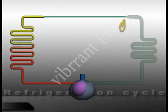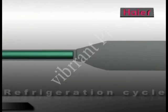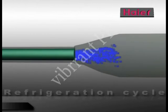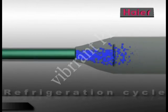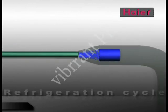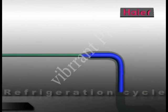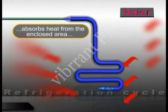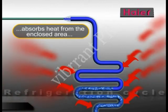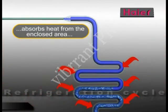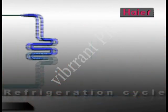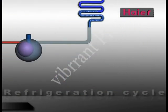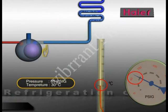This low pressure, low temperature liquid refrigerant now enters the cooling coil or the evaporator. In the evaporator, the low pressure, low temperature liquid refrigerant absorbs heat from the enclosed area, thus cooling the enclosed area and converts into a vapor state.